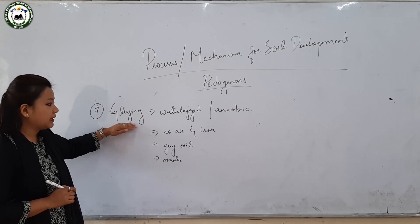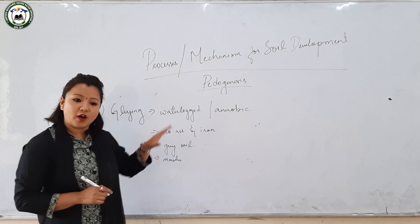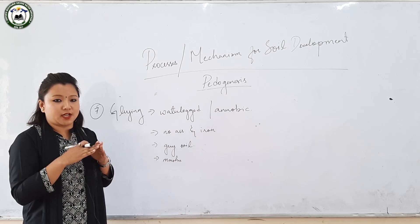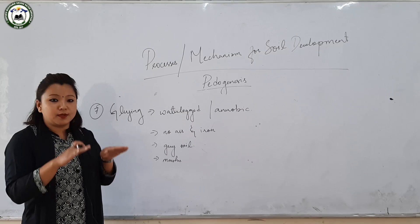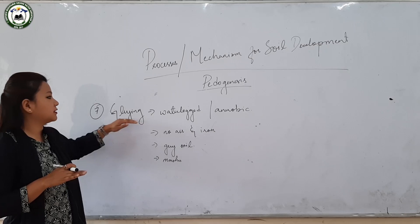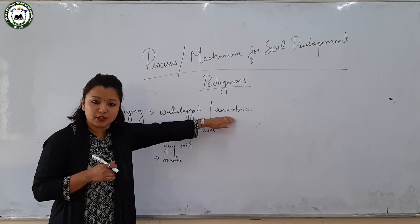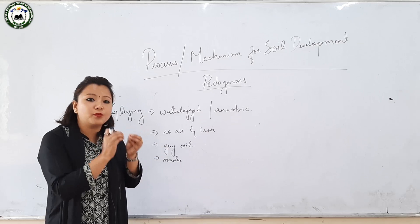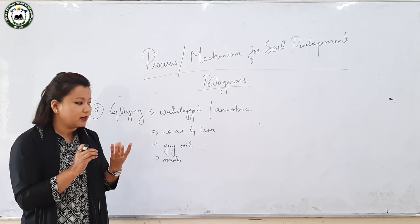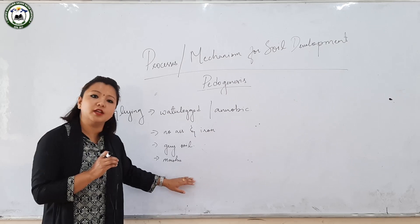The last process or mechanism for soil development is gleying. Gleying is profound in waterlogged or anaerobic conditions — in places where water has remained over a longer period of time with no well drainage. Because of these waterlogged anaerobic conditions, there is no circulation of air, no presence of air, and no presence of iron. Due to this, the soil turns to gray color and is also regarded as marshes or bogs. It is very infertile in nature.